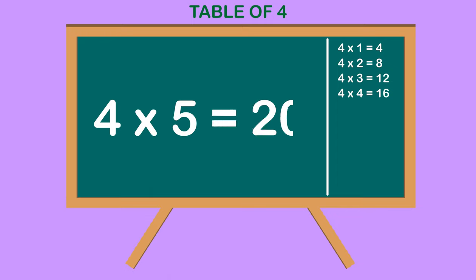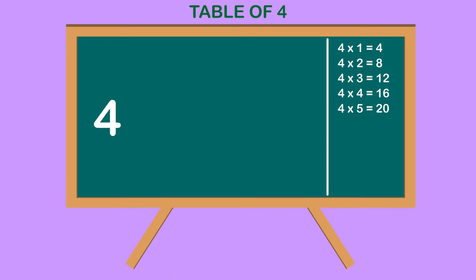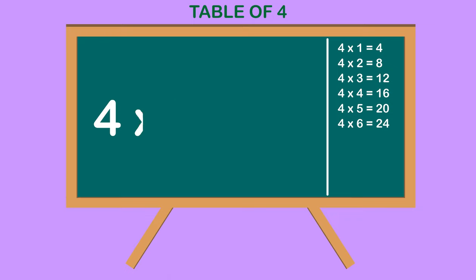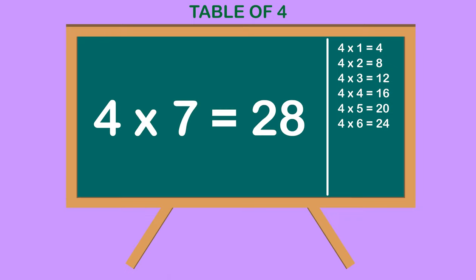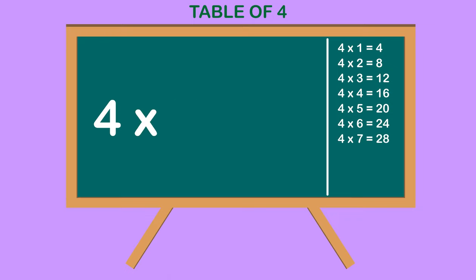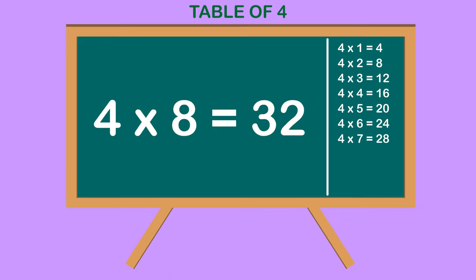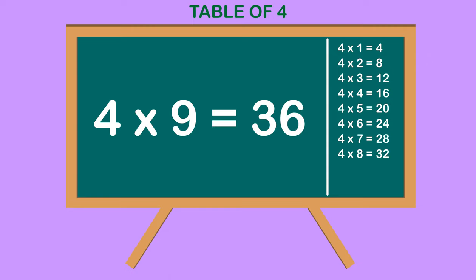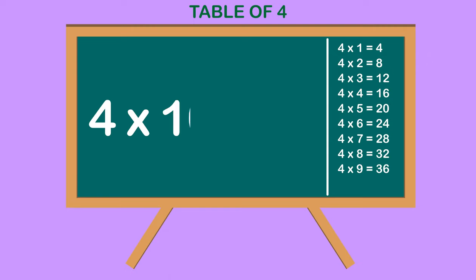4 5s are 20, 4 6s are 24, 4 7s are 28, 4 8s are 32, 4 9s are 36, 4 10s are 40.